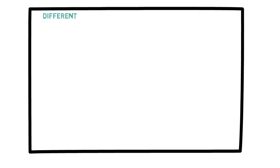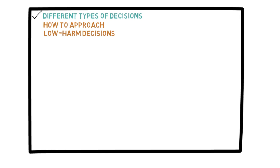In the previous few videos, we have been discussing different types of decisions and how to approach them. In the most recent video, I talked about how to approach a low-harm decision. The basic idea was that in such situations, we try to maximize the expected value. The example we discussed had to do with a very simple gambling problem, where all of the probabilities of the outcomes were known.